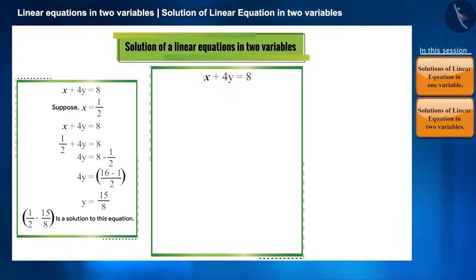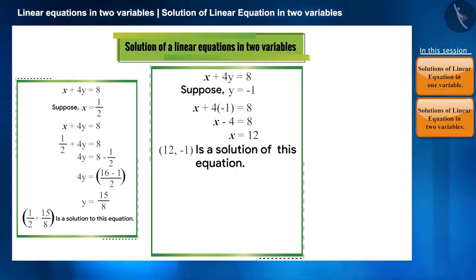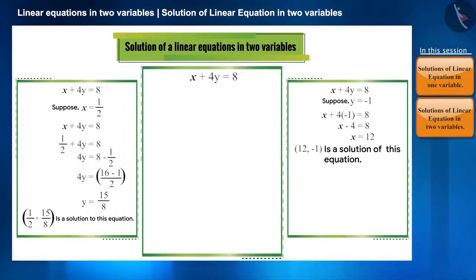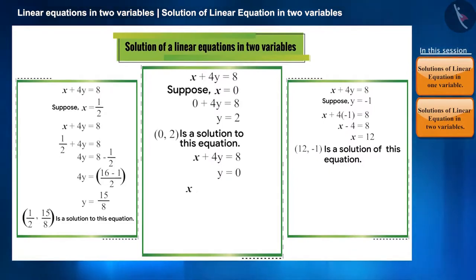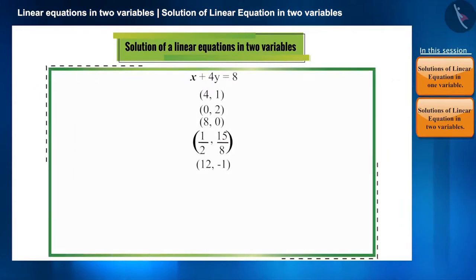Let's take the value of y as minus 1 and find the value of x. We get x equal to 12. So 12 comma minus 1 is another solution to this equation. Note that even though we found x by substituting y, while writing the solution we write it in the order of x comma y only. The easiest way to find solutions is to set x equal to 0 and solve for y, or set y equal to 0 and solve for x.